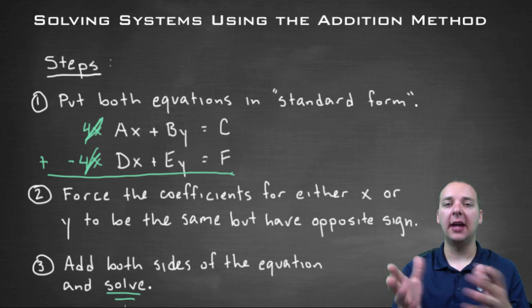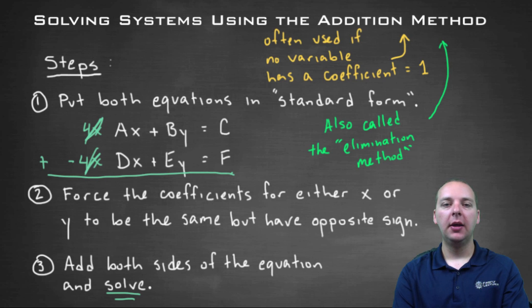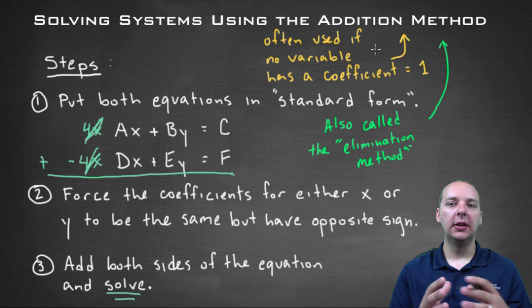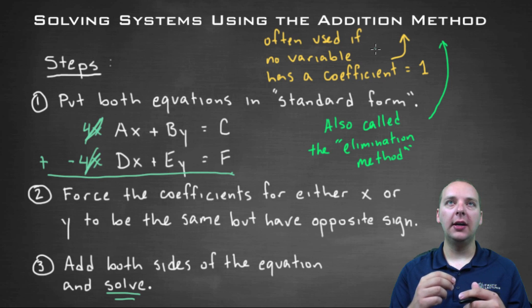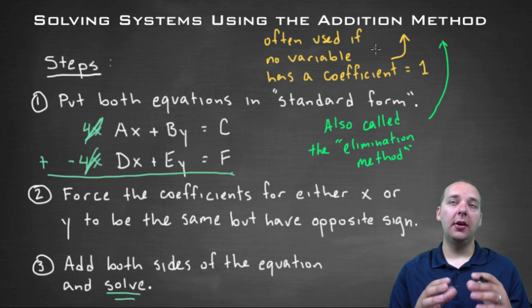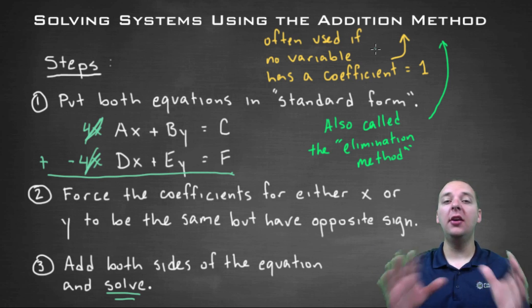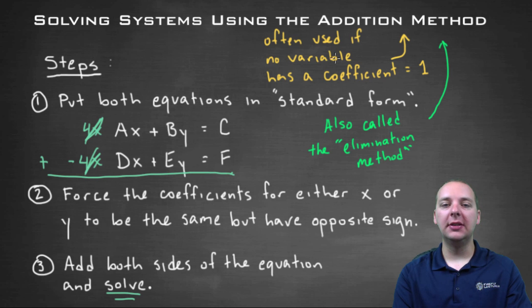A couple of remarks before we move on to examples. First, when would you use the addition method? The substitution method was a great method, but remember it's best if one of the variables in one of the two equations has a coefficient of one. If none of the x's and none of the y's have a coefficient of one, that would be a great time to use this addition method. This method is also often called the elimination method.